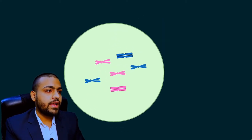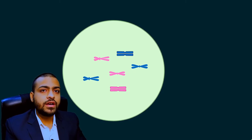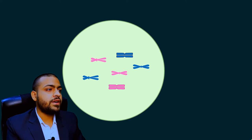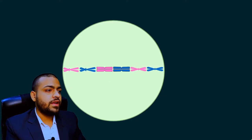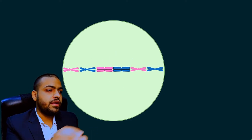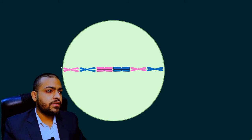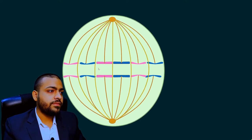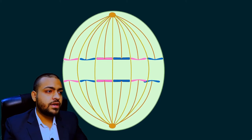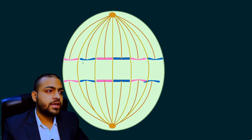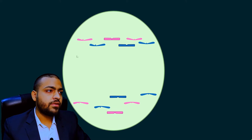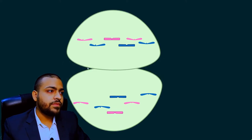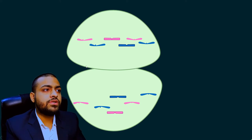Now, this zygote will undergo the process of mitosis. It will arrange on the mitotic plate in the midline, and then spindle fibers will arise and pull the chromatids apart from each other, separating them. Now the zygote has been divided into two daughter cells.